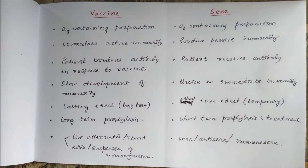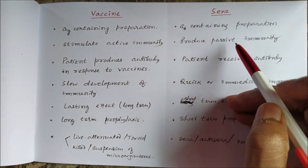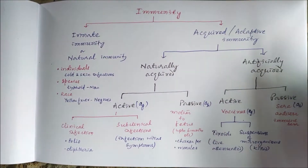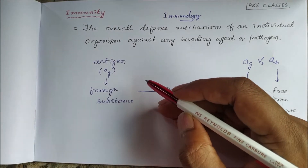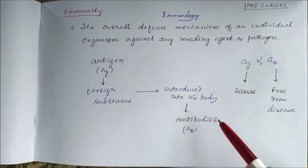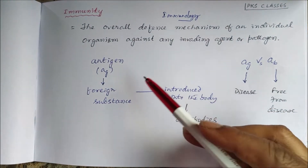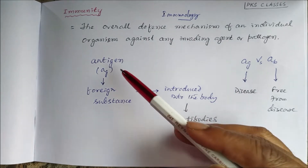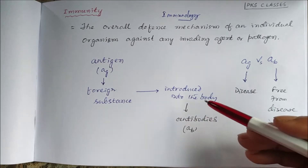Today we will study the difference between vaccines and sera. When there is any foreign substance or infectious agent, which we call an antigen, introduced into the body, our body in response to the antigen produces antibodies. So antigens are the foreign substances — when they enter our body, our immune system processes those antigens.